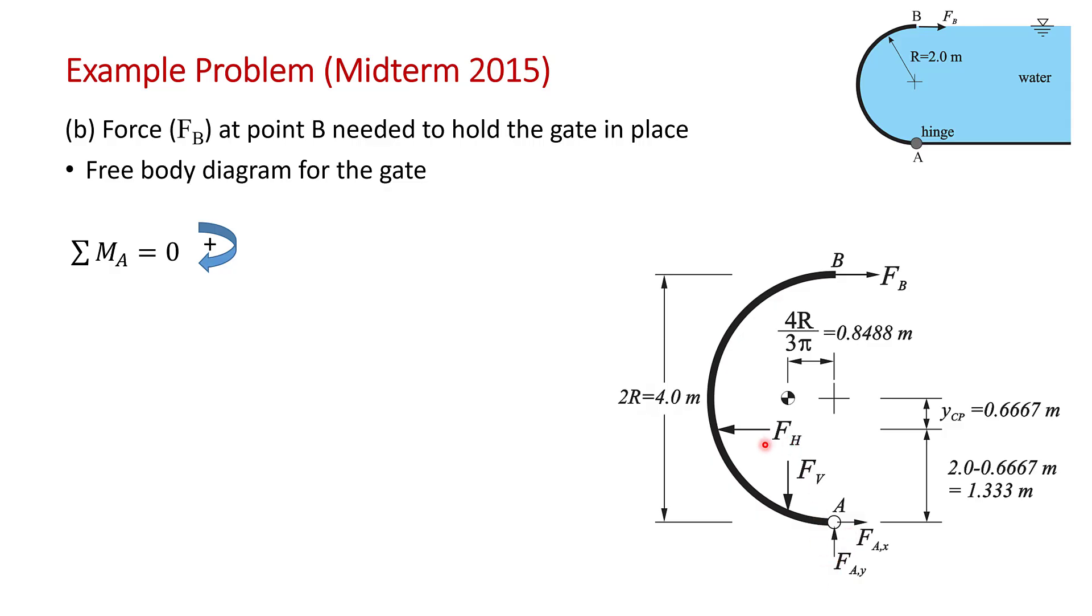Don't forget there are hinge forces at A. So there's FAx and FAY. This is our horizontal hydrostatic force. There's the weight of the fluid, the vertical force. And I've put on the locations where they act. We just calculated that FH acts below the centroid at 0.6667 meters.